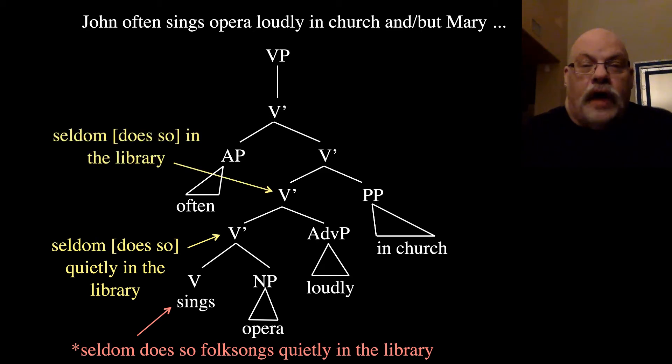We've got John often sings opera loudly in church, but Mary seldom does so—that is targeting the V bar above that. And then John often sings opera loudly in church and Mary does so too targets the V bar right underneath the verb phrase. So these V bar structures account for all the possible do-so replacements that you can have.